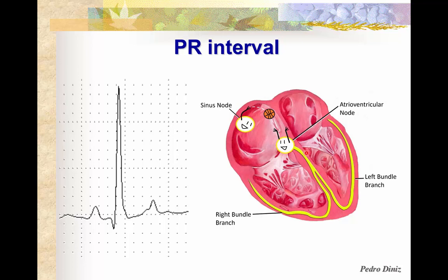So, it's like in this diagram — the time it takes for the basketball to be passed from the SA node to the AV node, including the time that the AV node holds that ball before it sends it to the ventricles. The PR interval is characterized by the beginning of the P wave all the way to the beginning of the QRS complex.